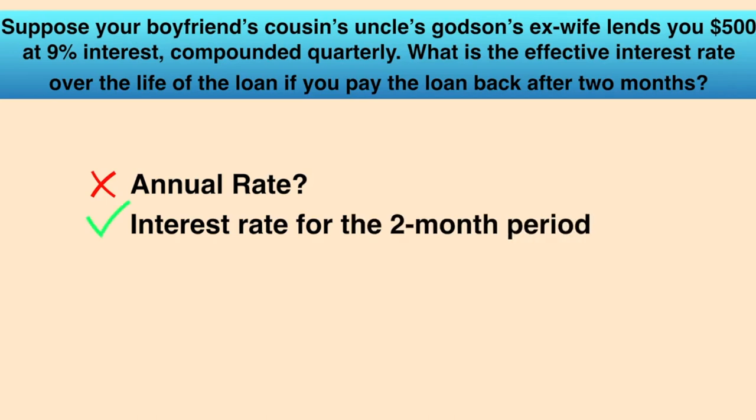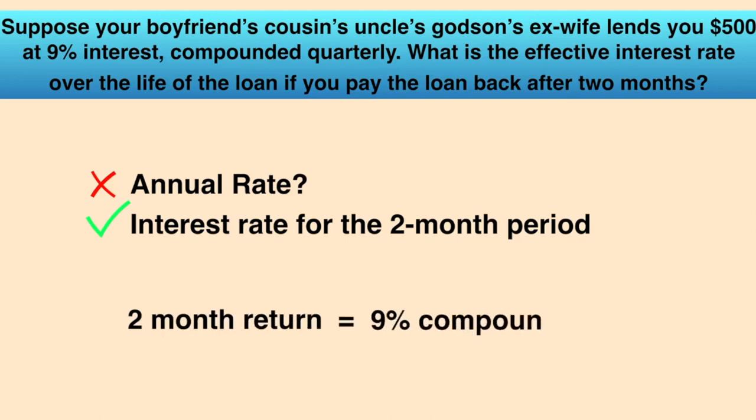We want to know effectively how much interest was paid for those two months, expressed as a percentage of the total investment. To calculate this, we have to figure out what two-month effective rate would give us the same return as 9% compounded quarterly over those two months.